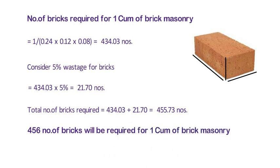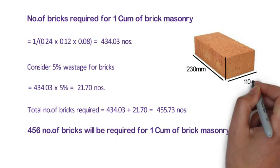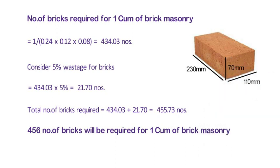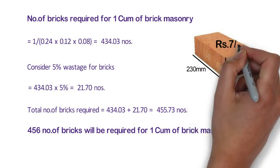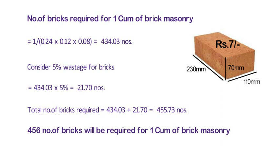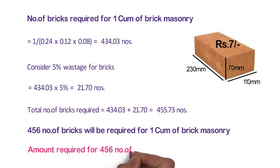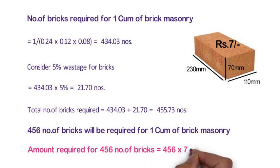The rate of one brick of size 230x110x70mm available in the market is approximately 7 rupees. This rate will change depending upon the source of supply and site location. So the amount required for 456 numbers of bricks shall be 456 x 7 is equal to 3192 rupees.